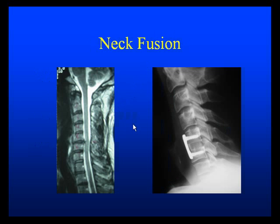The surgery that we usually perform is a fusion surgery in this case. Here's an example of a cervical MRI. We can see this disc herniation coming over and touching the nerves here. The surgery involves going in, taking this disc out from the front, putting a piece of bone in its place, and putting a plate in the front — and we can see it here.